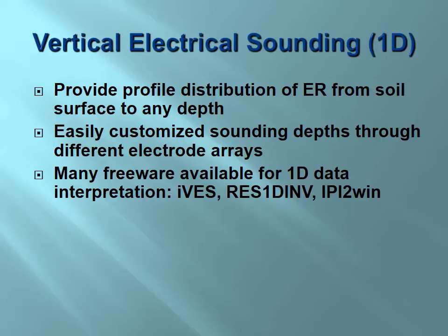Most techniques used in precision agriculture involve EC mapping. I want to highlight the technique of Vertical Electrical Sounding (VES), which is different from surface mapping — from one spot, you measure multiple depths going down the soil profile. You can easily customize the sounding through different electrode arrays, and there is a lot of freeware available for 1D data interpretation.